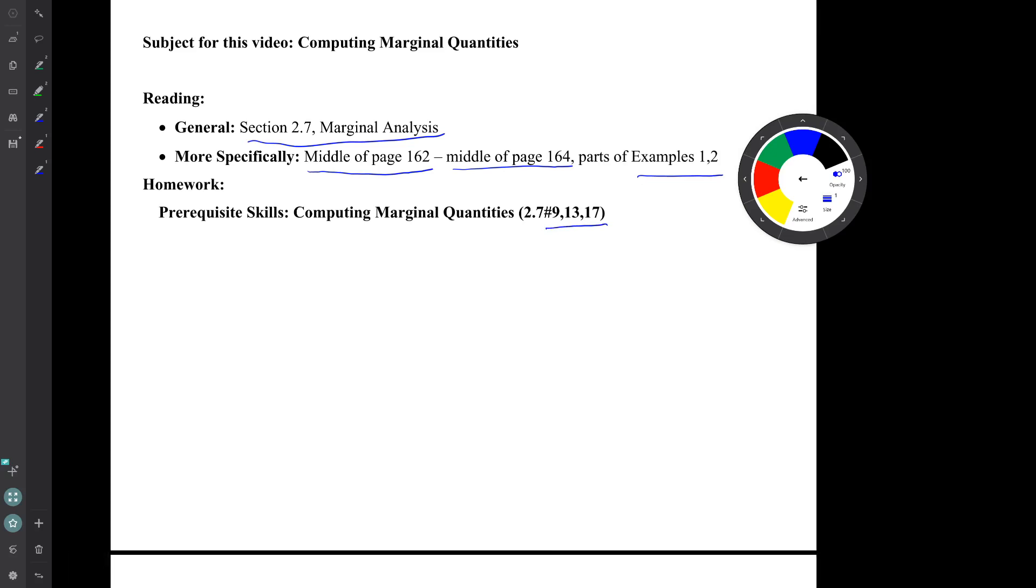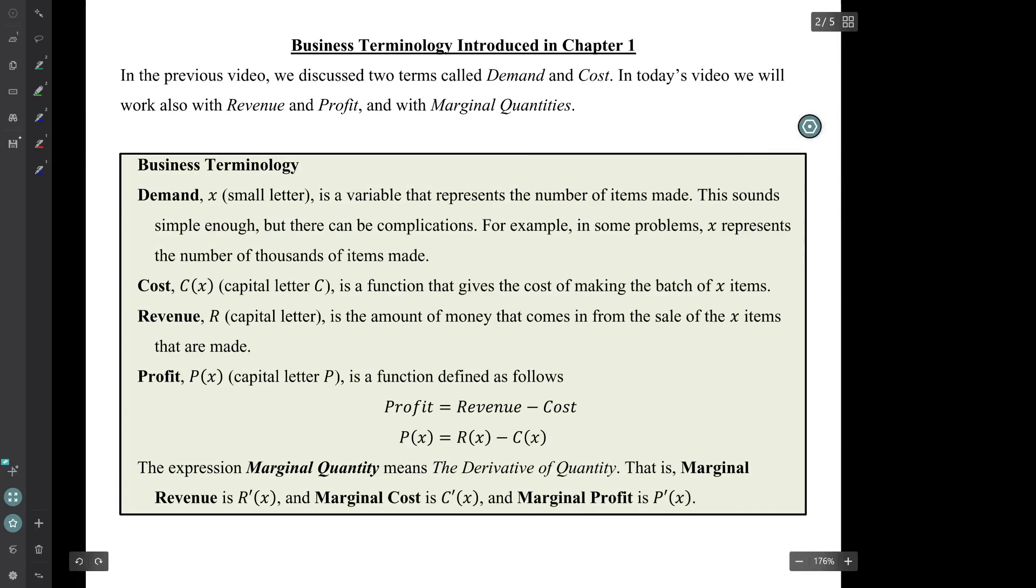I've incorrectly labeled this as prerequisite skills. It's not. This is stuff that's new for this course. In the previous video we discussed some business terminology. We discussed two terms called demand and cost. In today's video we'll work also with what's called revenue and profit and with marginal quantities. So to review from the previous video, the demand is the small letter x. It's a variable. It just represents the number of items made. The cost, capital C parentheses x, is a function that gives the cost of making the batch of x items.